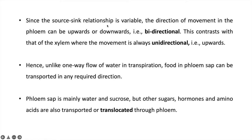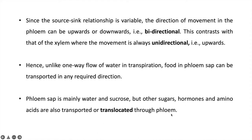Now we will study source-sink relationships. The source is the part of the plant where food and minerals are loaded, and the sink is the part where food and minerals are deposited. Movement of food and minerals occurs through phloem in both upward and downward directions depending on requirement — this is called bi-directional movement. In xylem, movement is always unidirectional, in the upward direction. Phloem sap transports food in any required direction and contains water, sucrose, hormones, and amino acids.